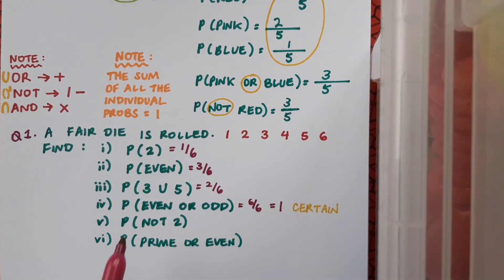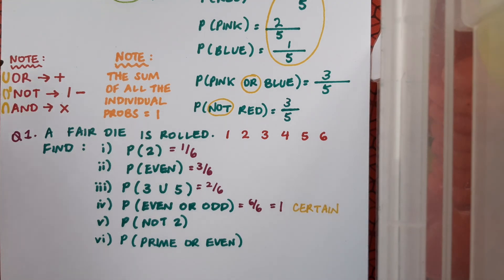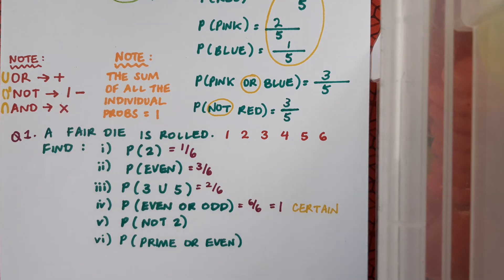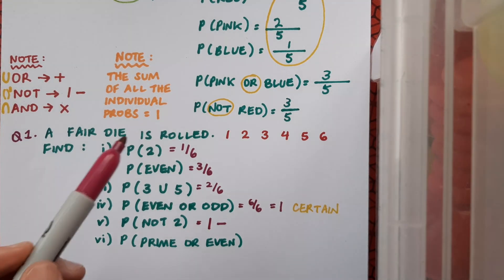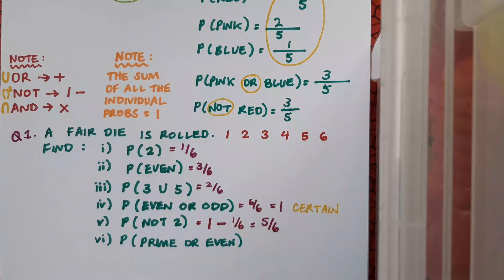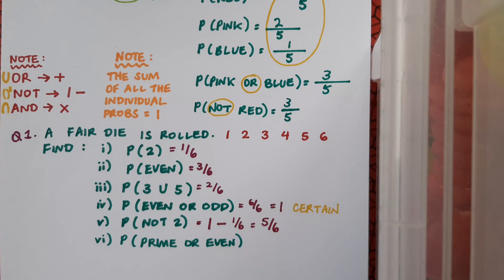Next we have the probability of not two. Just to refer back to our note further up the page, the probability of something not happening is the same as one minus the probability that it does happen. In this case we've already calculated the probability of getting a two, so that's one over six. So the probability of not two is five over six.